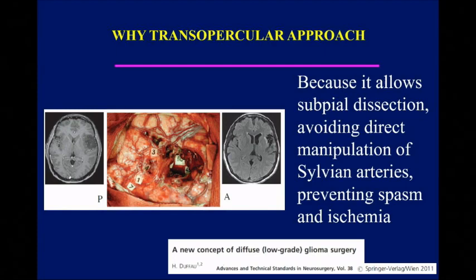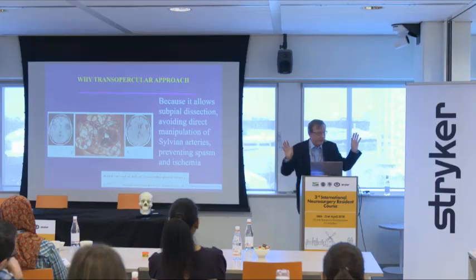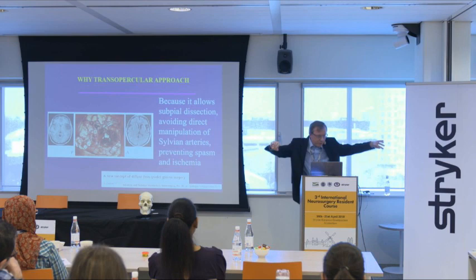Never — in ten years — have I split it in the Sylvian fissure. The rate of ischemic problems: zero. The rate of spasm: zero. The MD Anderson team came, and finally at noon surgery was finished. And they said, 'How was it possible to go so fast?' Because I removed the brain — because it's a brain tumor. I will not deal with the vessels; I'm not really a vascular surgeon. I'm afraid of the vessels.